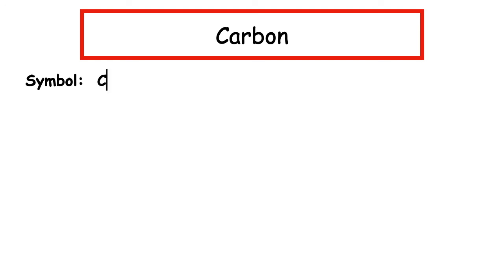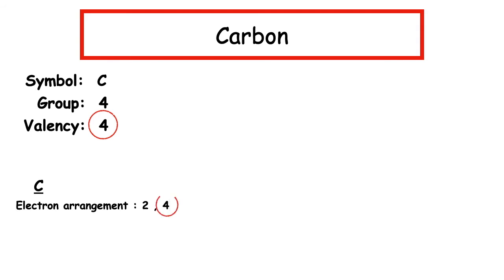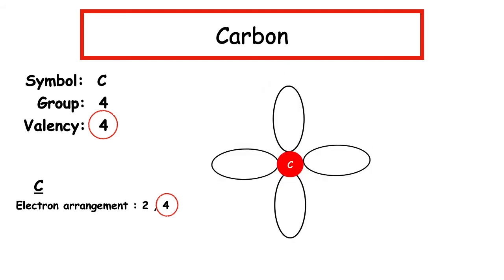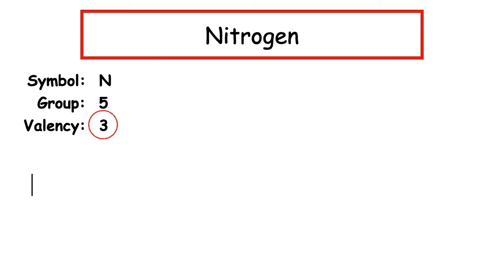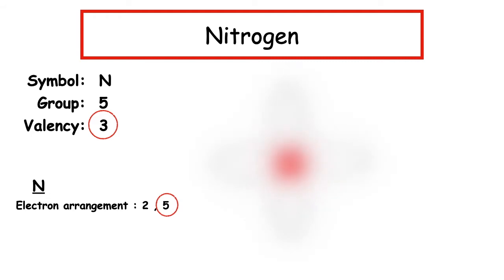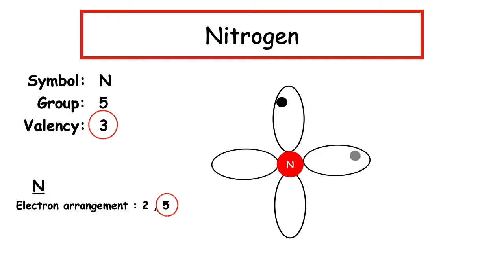Carbon has the chemical symbol C, found in Group 4 with a valency of 4. Carbon's electron arrangement is 2, 4. The outermost occupied energy level is the second energy level, so we draw a petal diagram and put in the four outer electrons. Nitrogen has the chemical symbol N, found in Group 5 with a valency of 3. The electron arrangement is 2, 5, and the outermost occupied energy level is the second, so we draw a petal diagram and place the five outer electrons in.